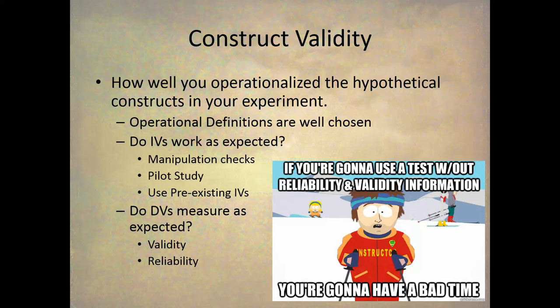Going back to the example experiment from the first two research methods videos: mood was the independent variable construct, and it was operationally defined by getting positive or negative feedback about how well you did on an important exam. It makes sense that receiving negative information should put you in a bad mood, and receiving positive information should put you in a good mood.